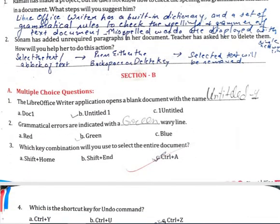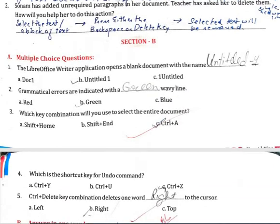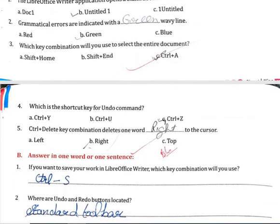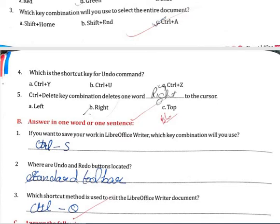Section B: Multiple Choice Questions. LibreOffice Writer application opens a blank document with the name Untitled 1. Grammatical errors are indicated with a green wavy line. Which key combination will you use to select the entire document? — Ctrl+A. Which is the shortcut key for the Undo command? — Ctrl+Z. Ctrl+Delete key combination deletes one word to the right of the cursor.